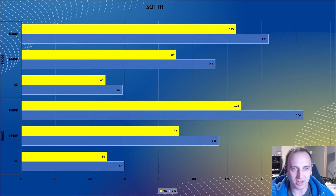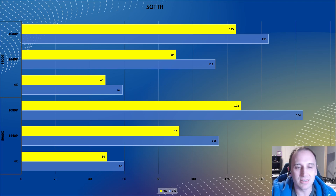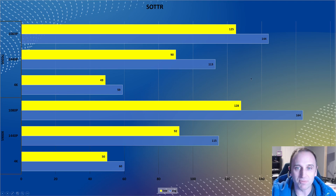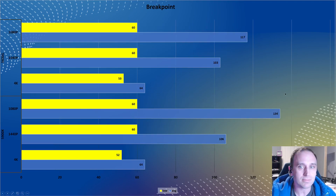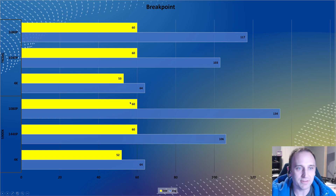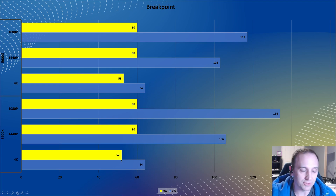If you're running a 5600G and thinking about upgrading to a 5900X, it's not really worth it — you're only getting an extra 5%, maybe 10% max, which isn't that much in the grand scheme of things. Your money would probably be better off saving for a new system or getting a better graphics card and going up to 4K. On Ghost Recon Breakpoint at 1080p, there's quite a big gap: 134 versus 117 average FPS, though oddly the lows are both around 60 with no difference. At 1440p and 4K, there's not much difference between the two CPUs.